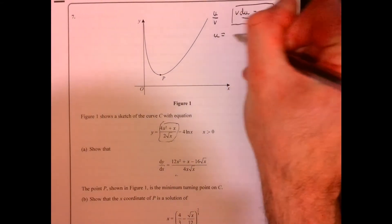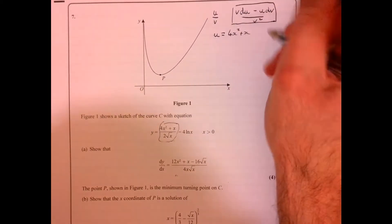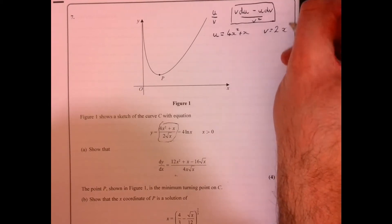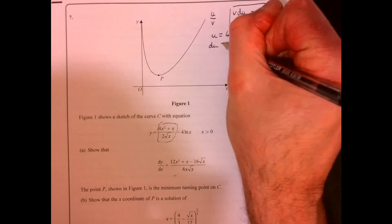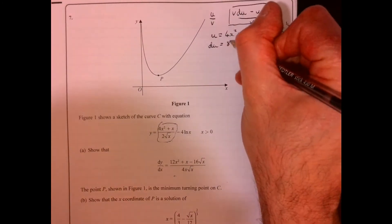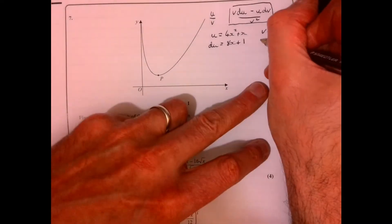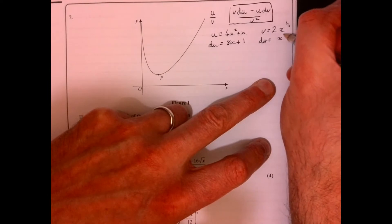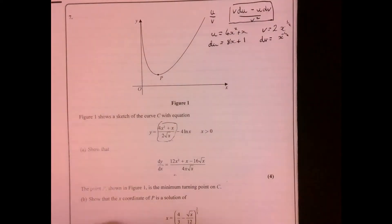When you do this, just write down each little bit first of all. We've got u and we've got v. du is equal to 8x plus 1, and dv is going to equal x to the minus a half.